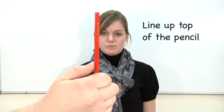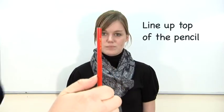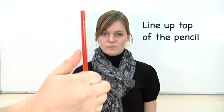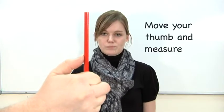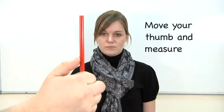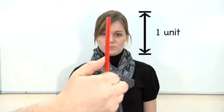So what I'm going to do first is line up the top of my pencil here with the top of Gemma's head. And then I'll bring my thumb down until it's in line with Gemma's chin. That then becomes one unit, from the head to her chin.